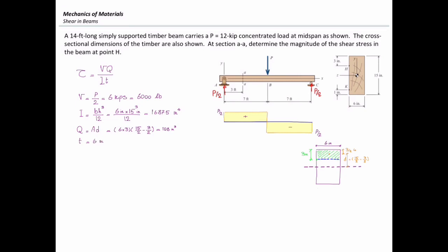Now I plug these parameters into the shear stress equation. V is 6,000 pounds, Q is 108, I is 1687.5, and thickness is 6 inches. That gives me the value of shear stress at this point equal to 64 pounds per square inch, which is 64 psi. That's the answer for point H.